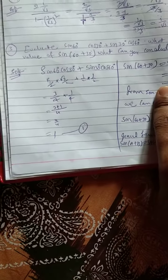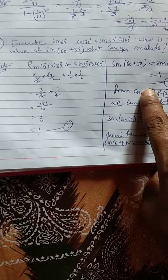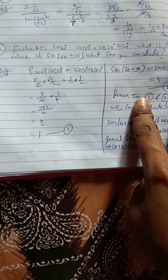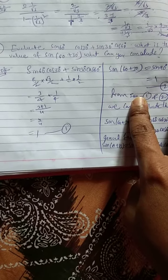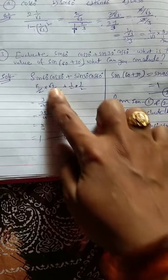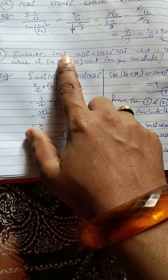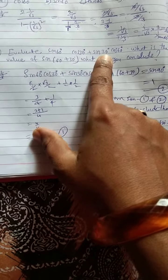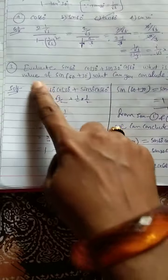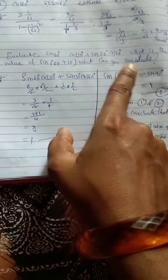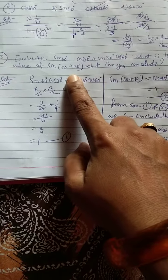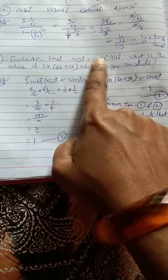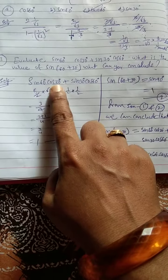Next, continuation, third question. These are small sums so that's why I am not using the board, friends. Evaluate sin 60 cos 30 plus sin 30 cos 60. What is the value of sin 60 plus 30? What can you conclude? First you have to take the first value sin 60 cos 30 plus sin 30 cos 60.